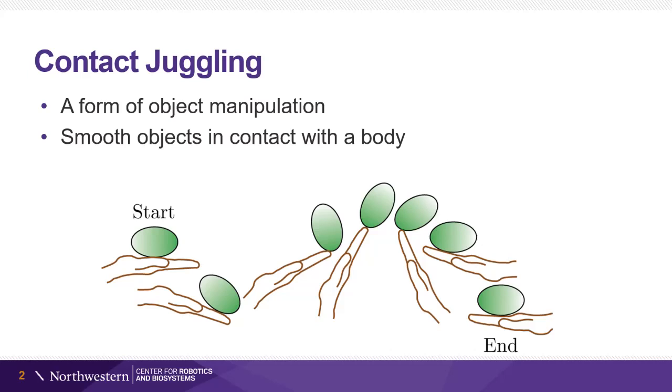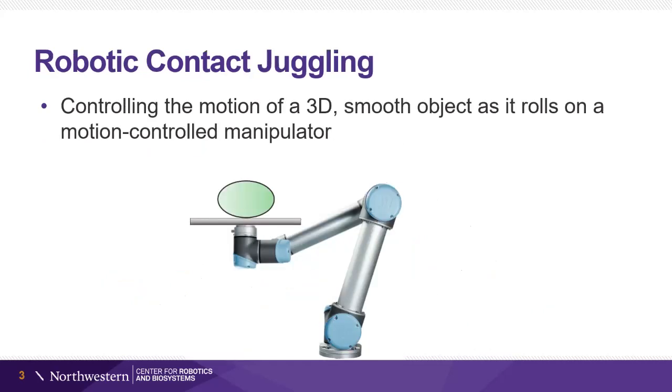This work focuses on the robotic implementation of contact juggling. We define robotic contact juggling as controlling the motion of a 3D smooth object as it rolls on a motion-controlled manipulator.